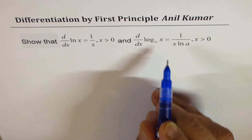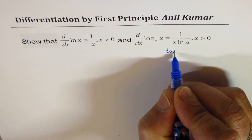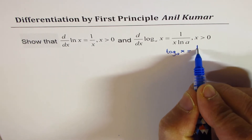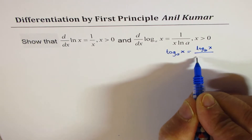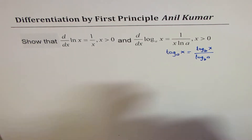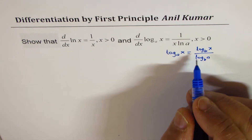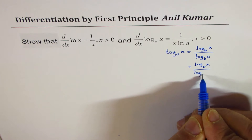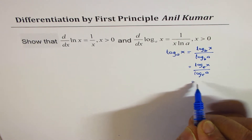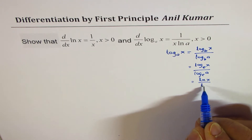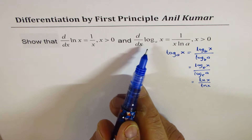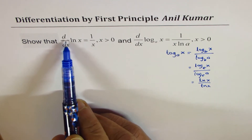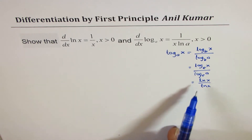Now you know how the change of base formula works. If I have log to the base a of x, I could change the base to any other base b. In our case, we are changing the base to e, so we could write this as log to the base e of x over log to the base e of a. Since log to the base e is ln, we have ln(x) over ln(a). So the derivative of log base a of x will be 1 over x — same as that of ln(x) — times 1 over ln(a).